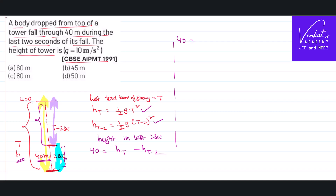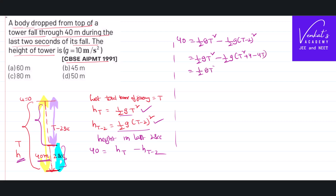So: 40 equals height in T seconds minus height in (T-2) seconds, which gives us: 40 equals half G T squared minus half G times (T minus 2) squared. Expanding the second term: half G T squared minus half G T squared, minus half G into 4, plus half G into 4T.